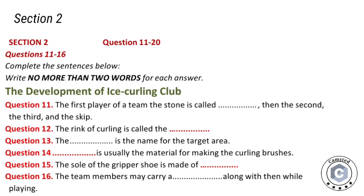Now turn to section 2. Section 2 — you'll hear a talk between an interviewer and an interviewee called Chris Evans from the Royal Caledonian Curling Club about ice curling. First you have some time to look at questions 11 to 16. Now listen carefully and answer questions 11 to 16.